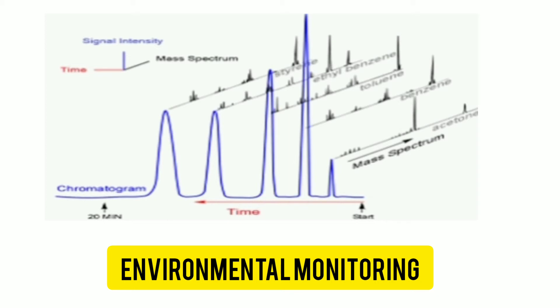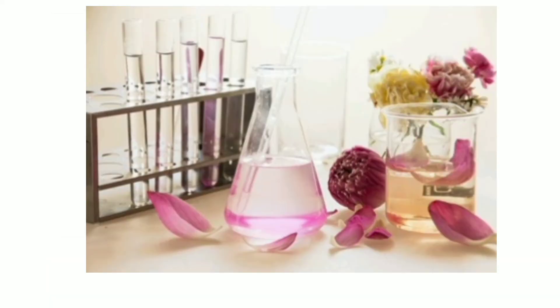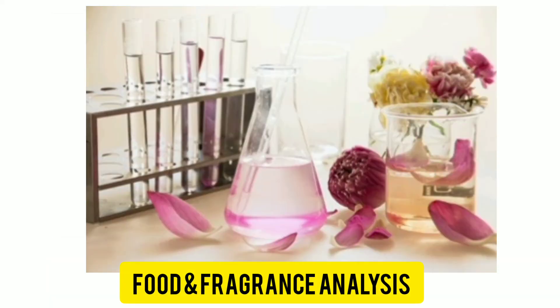Environmental monitoring: detection of environmental pollutants, pesticides, and other hazardous chemicals in air, soil, and water. Food and fragrance analysis: GC-MS is used for evaluating the purity of fragrant products and quality of food materials by detecting fatty acids, esters, aldehydes, alcohols, etc. This technique can also detect spoilage or contamination of food items.